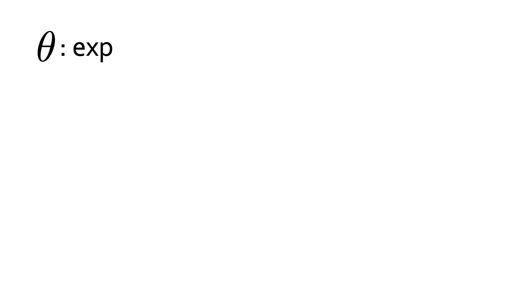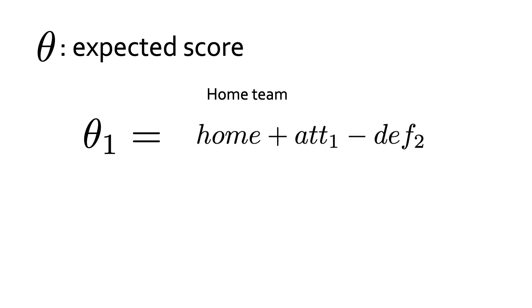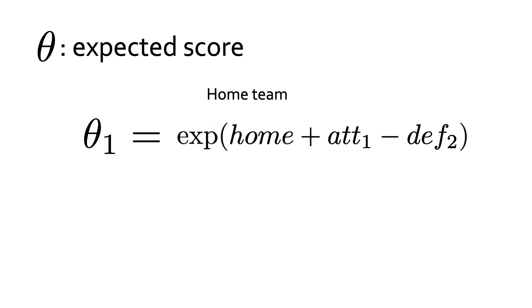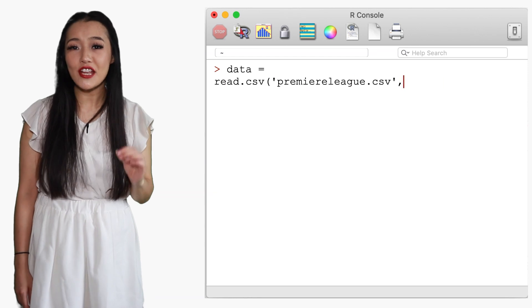Here, theta is the expected score. For the home team, theta_1 is the sum of the home advantage and the attack ability of the home team, minus the defense ability of the away team. Since theta has to be positive, we take the exponent. For the away team, theta_2 is the same as theta_1 but without the home advantage.